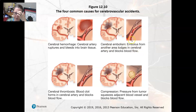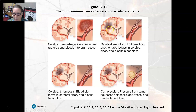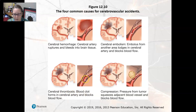Cerebral embolism is an embolus — a clot that comes from another area, such as the leg, and lodges in the cerebral artery and blocks blood flow, so tissue downstream will start to die. Cerebral thrombosis is when a blood clot forms directly in the cerebral artery and blocks blood flow; the consequence is the same as cerebral embolism.